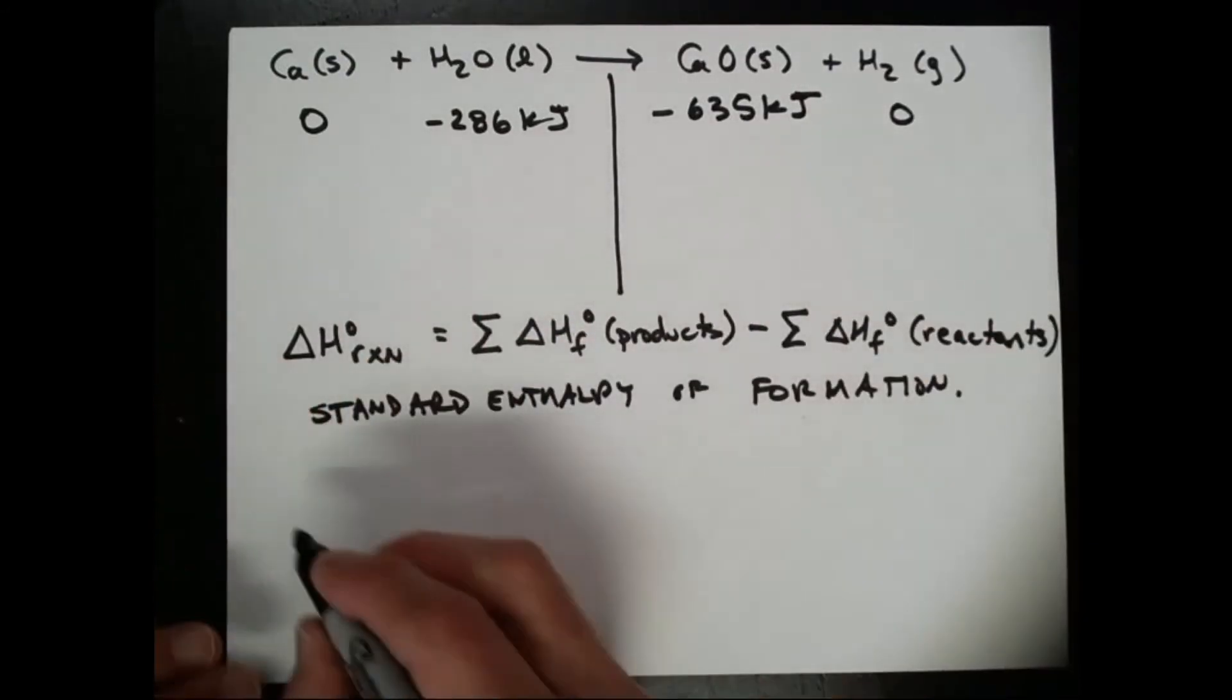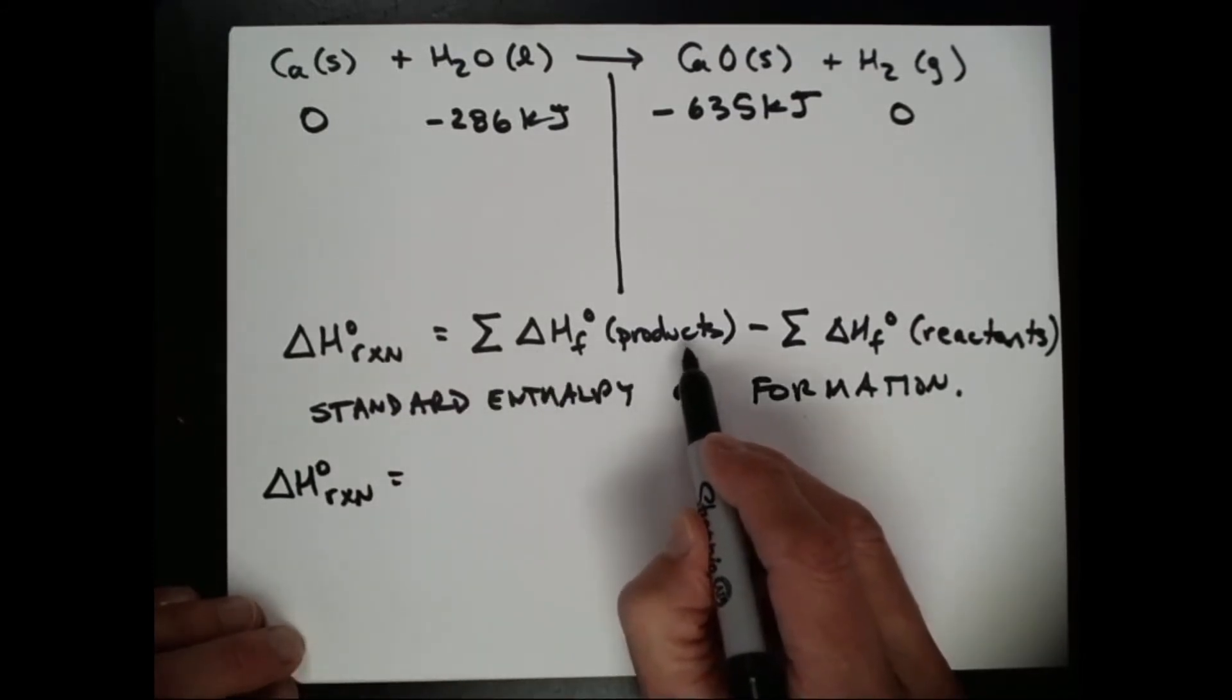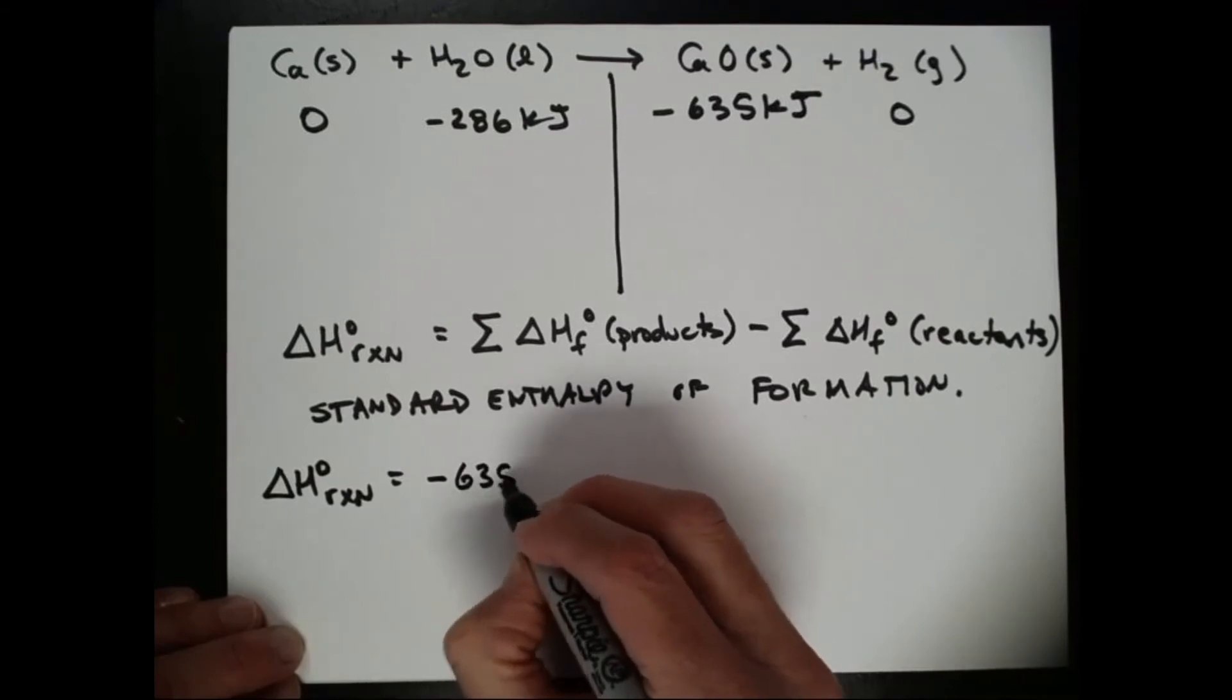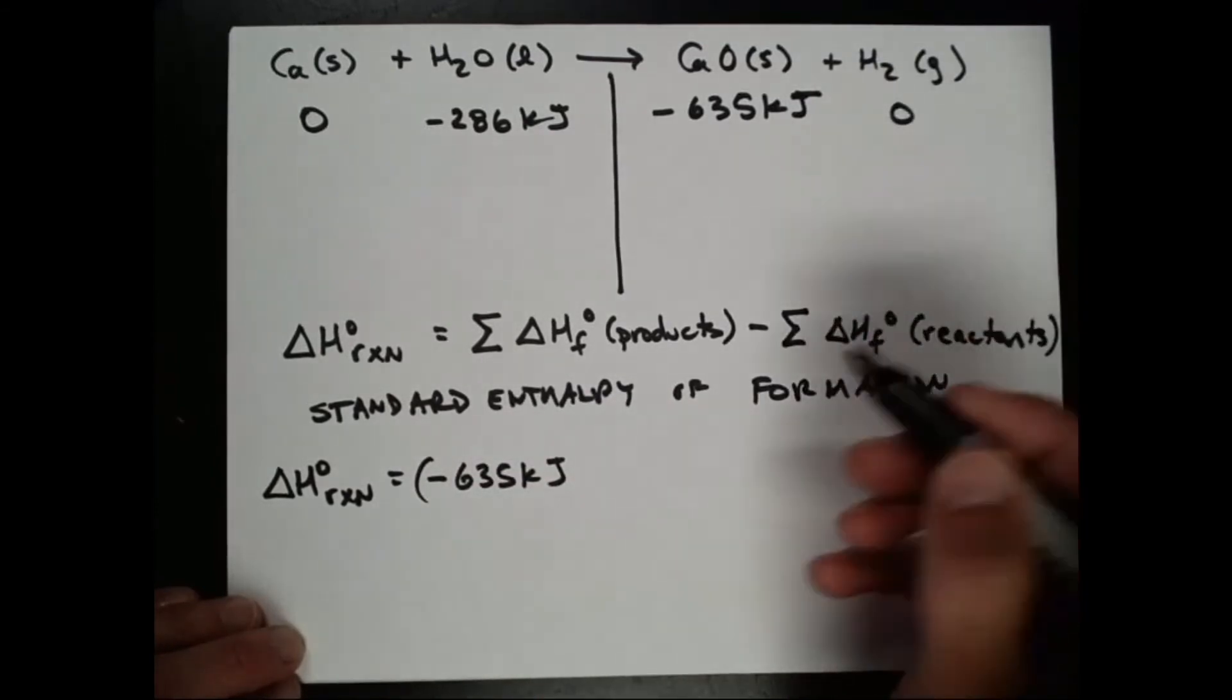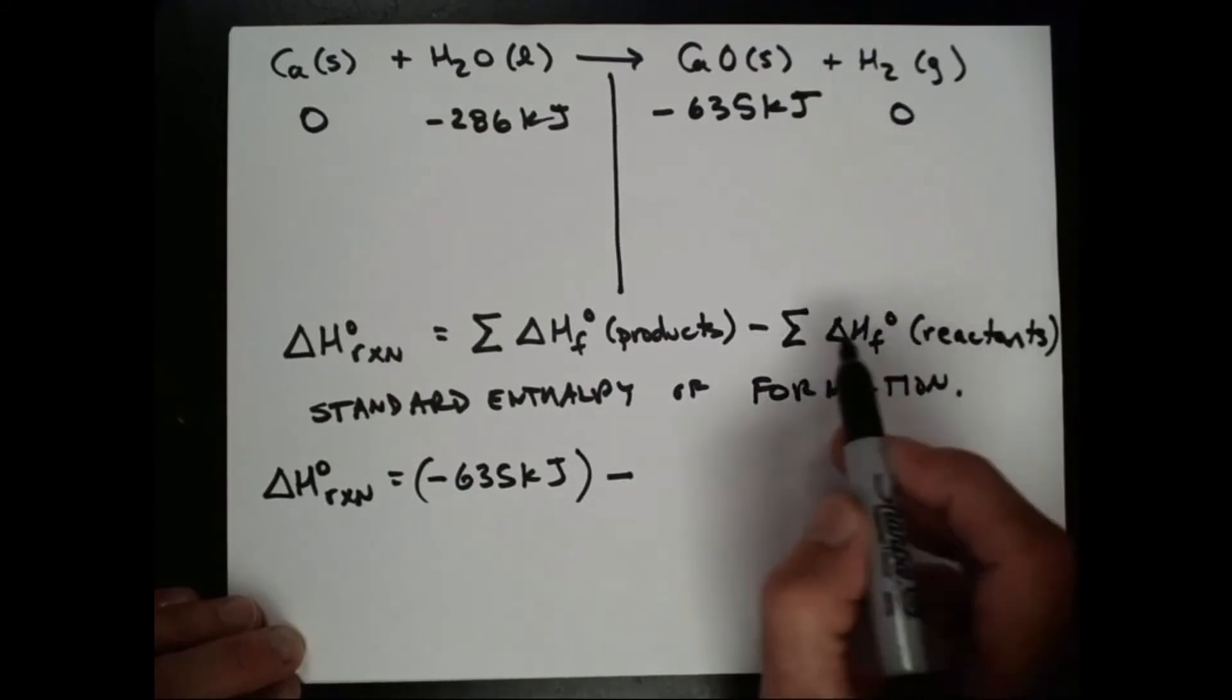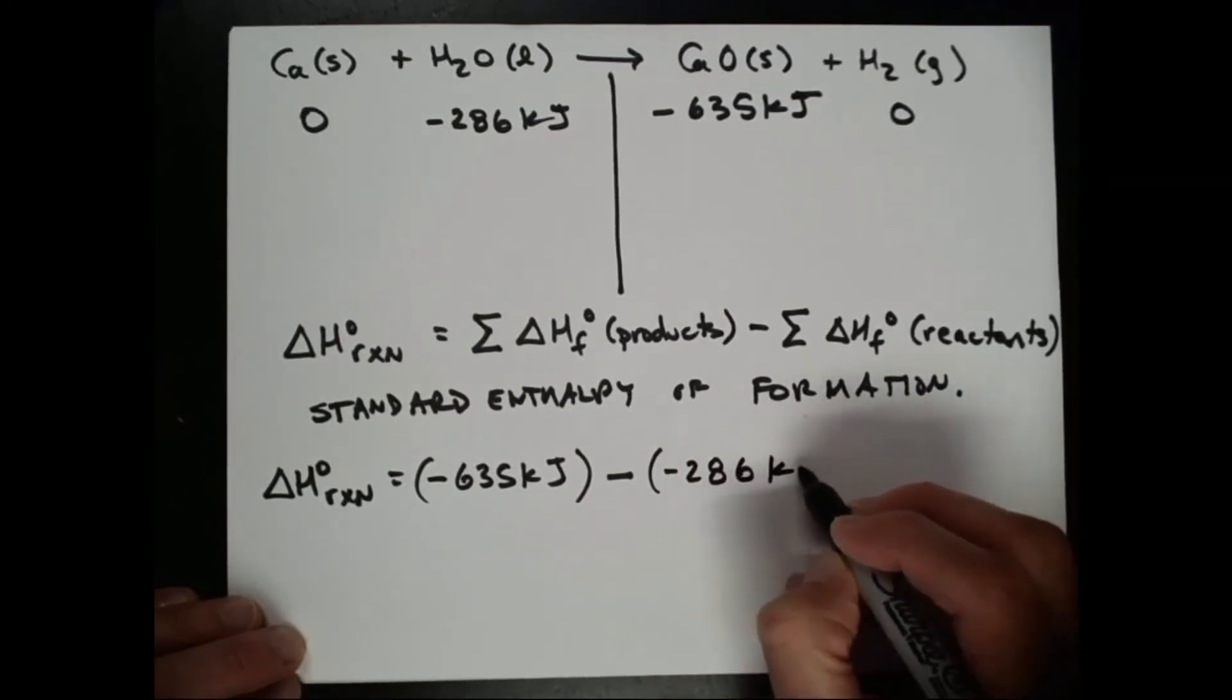Now we'll plug these values into this equation, so we'll find the standard enthalpy for this particular reaction. We'll take the standard enthalpy of formation of the products, 635 kilojoules, and there's only one mole, so we're going to take negative 635 kilojoules, and we're going to add zero, which doesn't matter, and now we need to subtract the standard enthalpy of the formation of the reactant sum together, which is zero and a negative 286 kilojoules.